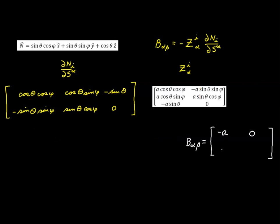The second row, first column is the sum of products of the second row and the first column. By inspection, one term is negative and the other is positive, but both have the same factors of a sine theta cosine theta sine phi cosine phi, and the third term is zero. So we again have two equal and opposite terms adding to zero, meaning this element is also zero.